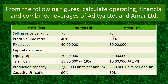PV ratio is 40% and 60% respectively. Fixed cost is given as 40 lakhs and 60 lakh rupees. In capital structure, equity capital is 20 lakhs for Aditya Limited and 35 lakhs for Amar Limited. Term loan is 15 lakhs at 18% interest rate for Aditya, and 10 lakhs at 17% interest rate for Amar. Production capacity is 2 lakh units per annum and 3 lakh 50,000 units per annum.